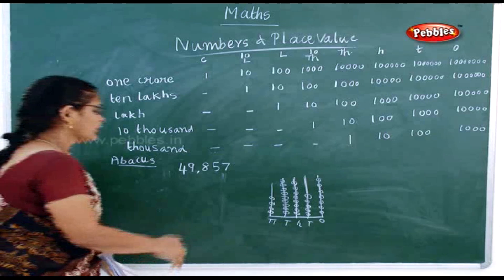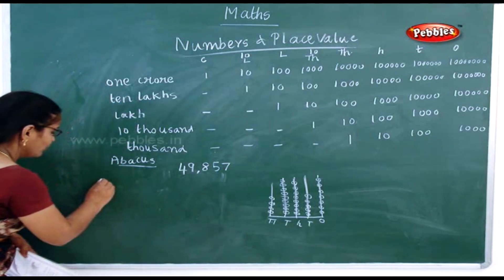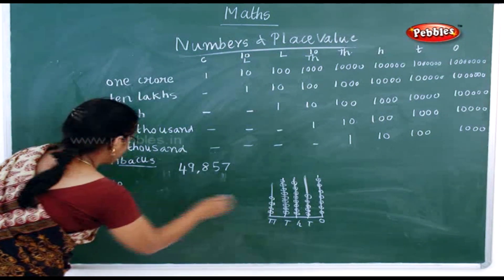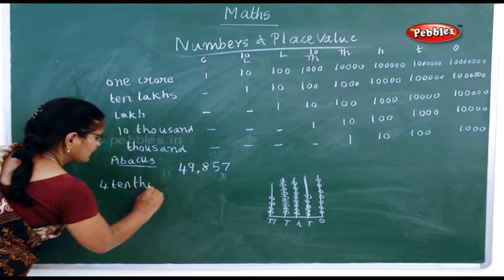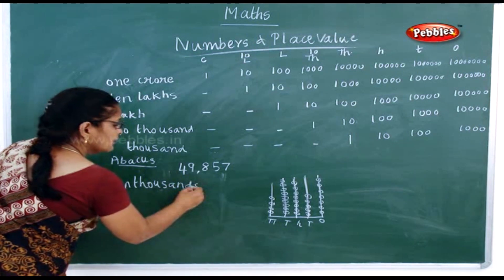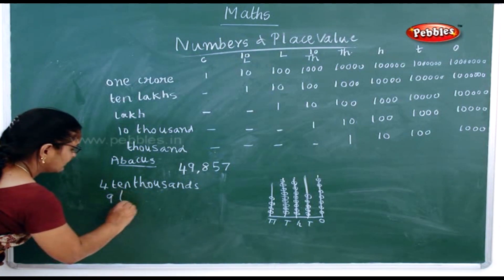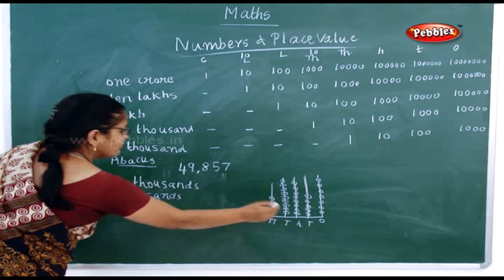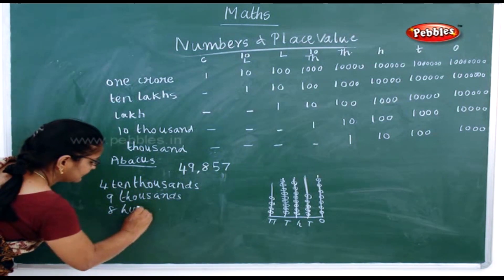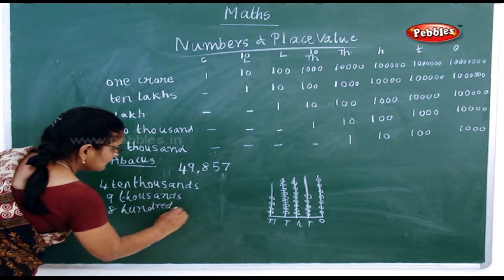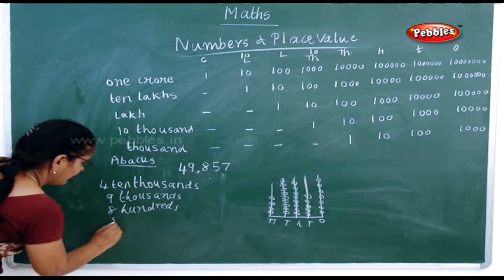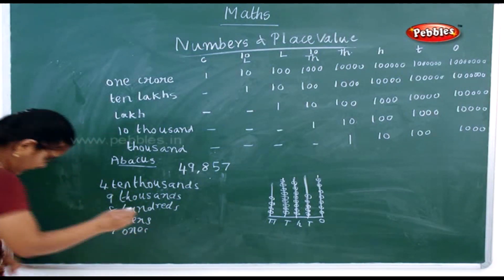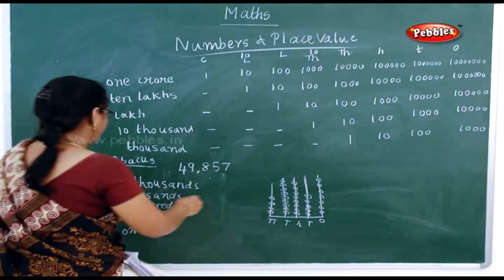Now how will you expand it? How many ten-thousands? 4. How many thousands? 9,000. How many hundreds? 8 hundreds. How many tens? 5 tens. And how many ones? 7 ones.